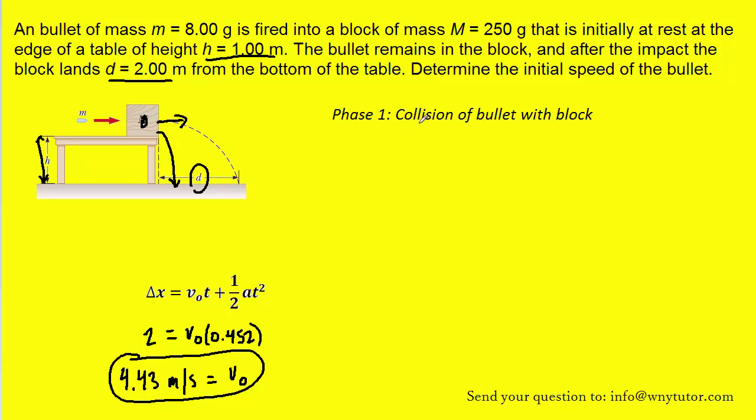Remember, in phase one, we had a collision of the bullet with the block. So let's draw that collision. We have the initial, where the bullet is approaching the at rest block. And then the final, where the bullet is embedded in the block.